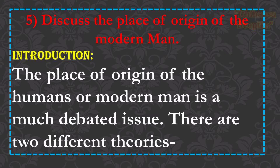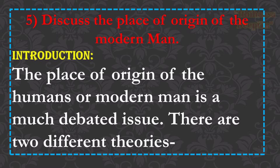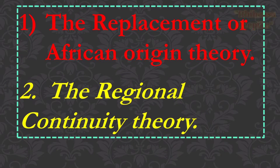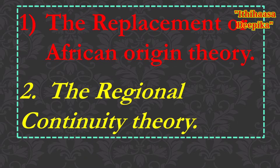Question number 5: Discuss the place of origin of modern man. The place of origin of humans is a much-debated issue. There are two different theories: first, the replacement or African origin theory; and second, the regional continuity theory.